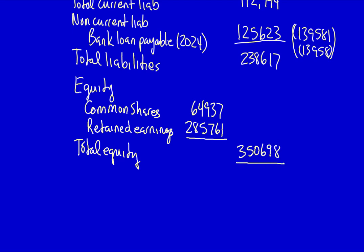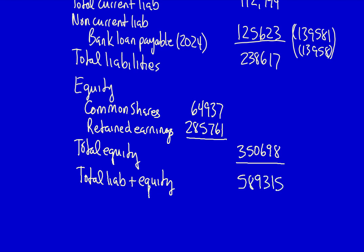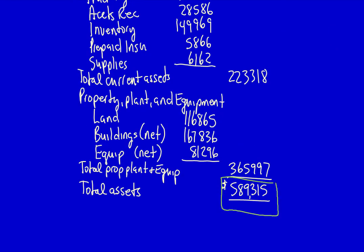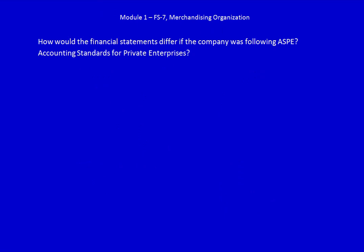If we add together total liabilities plus total equity, we should end up with the same total as total assets — $589,315. Comparing that to total assets, we discover that they match perfectly, so our statement of financial position has balanced. How would the financial statements differ if the company was following ASPE — accounting standards for private enterprises? That's the topic of the next video.